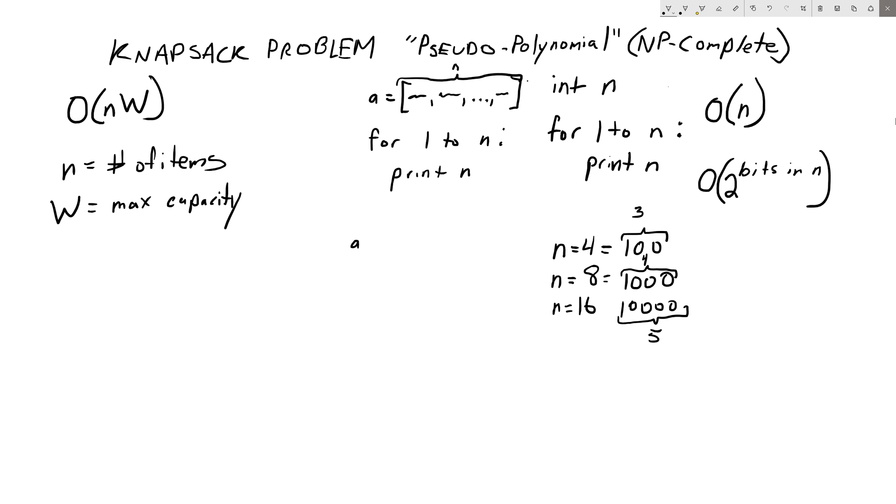Well, if we give it an input value again here of, if A equals, and actually, let's do this another way, just to simplify it. Let's say that this is an array of Boolean values. So, our input, let's say, is 0, 1, 0, 1.